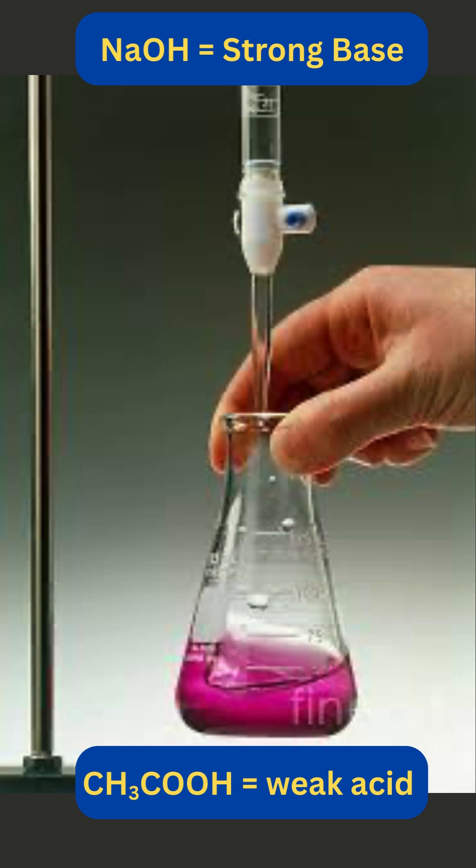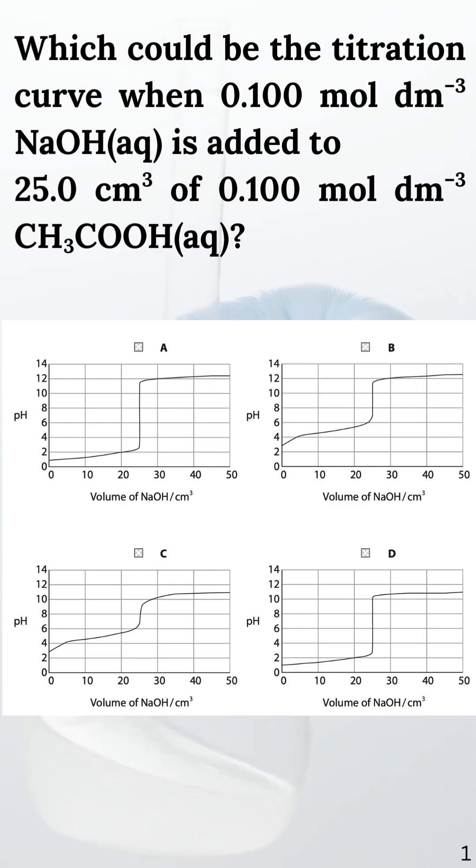We need to start with an acidic pH. It's acid in the flask. Looking at the graphs, all of them start acidic, so nothing to eliminate yet.